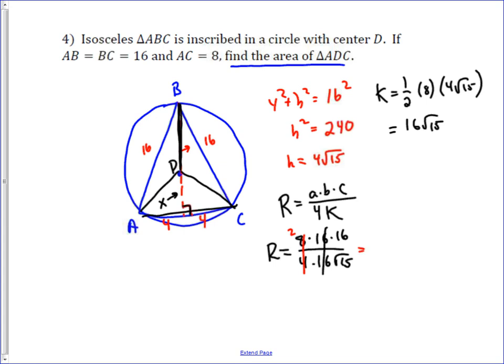So, we end up with R, big R is 32 over 15, root 15, which simplifies when you do the conjugate to 32 root 15 over 15.